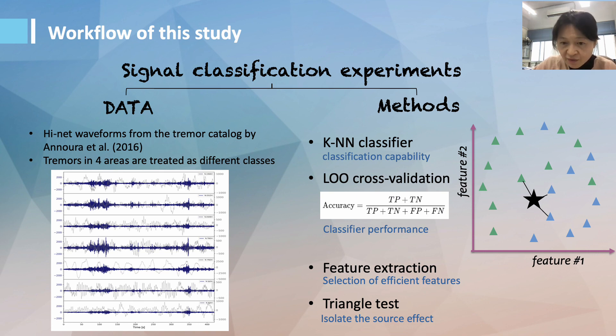The classification performance is obtained using leave-one-out cross validation, and the efficient features were selected using F-score. And the source effect is obtained using a triangle test designed by this study, which we'll introduce briefly later.